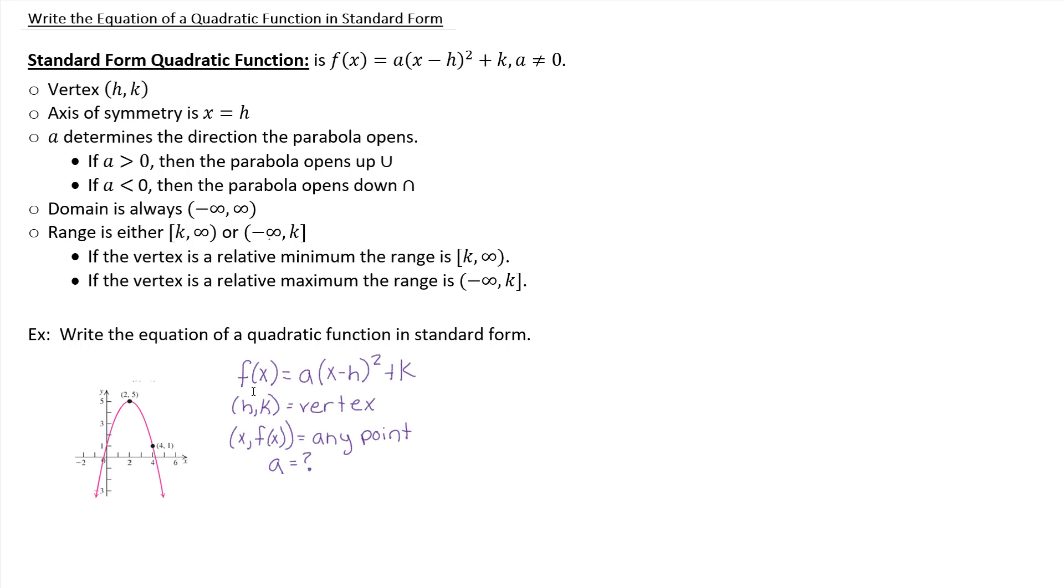So ultimately, the vertex is 2 comma 5. How do I know that? Look at your graph. That is the high point. And a vertex is always either the high point or the low point. As far as any other point on the graph, you really could pick any other point. But we do have another point that's labeled. So we have 4 comma 1 labeled. So let's just use that.